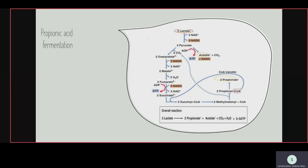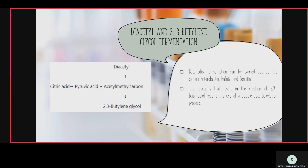Coenzyme transfer also takes place — the coenzyme is used, then removed, then used again in a cyclic process. Dehydration and hydration also take place: first dehydration when oxaloacetate converts, then hydration when oxaloacetate converts into malate, then again hydration takes place in this reaction.